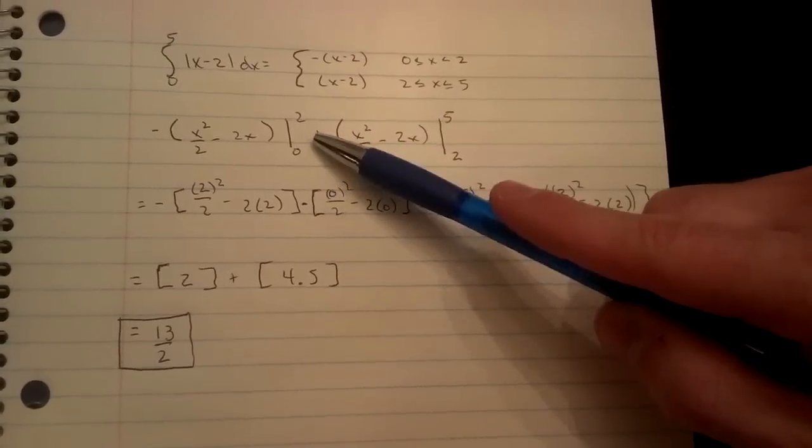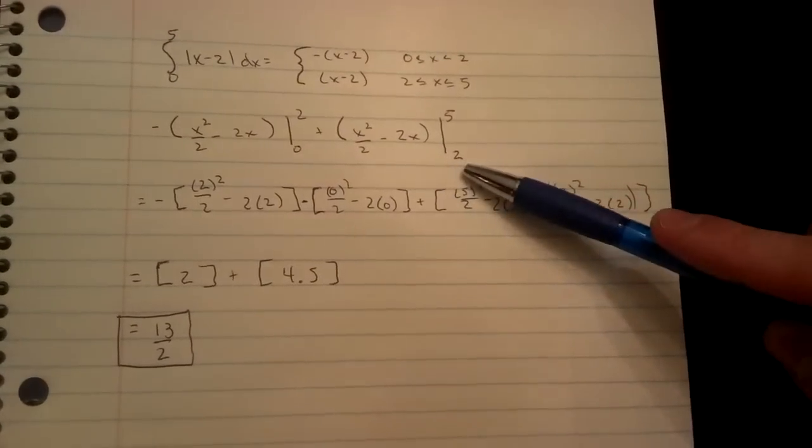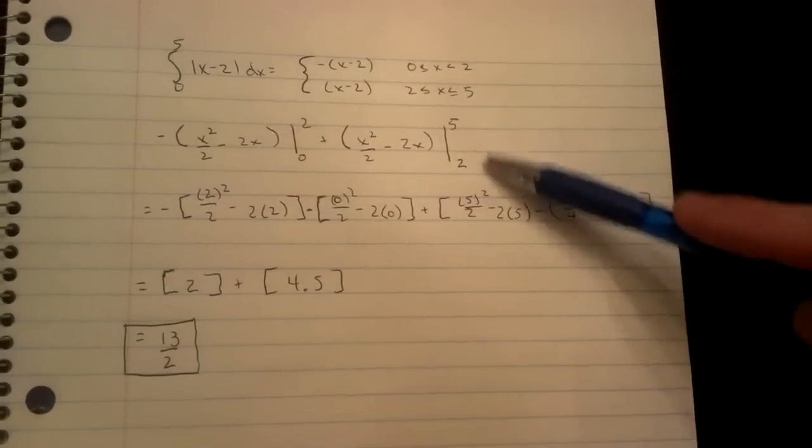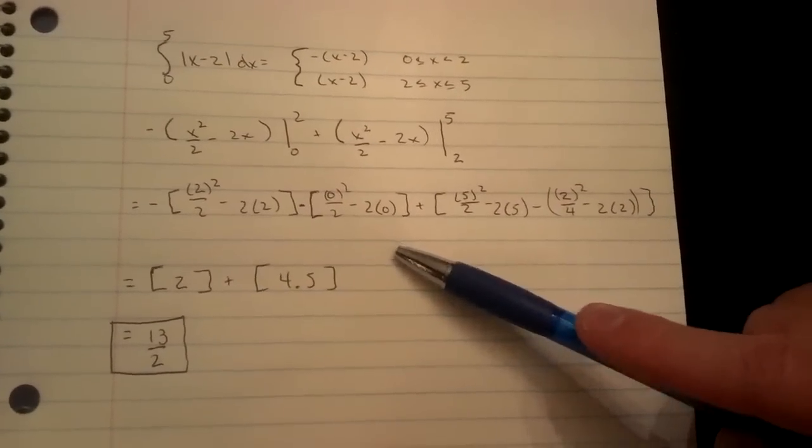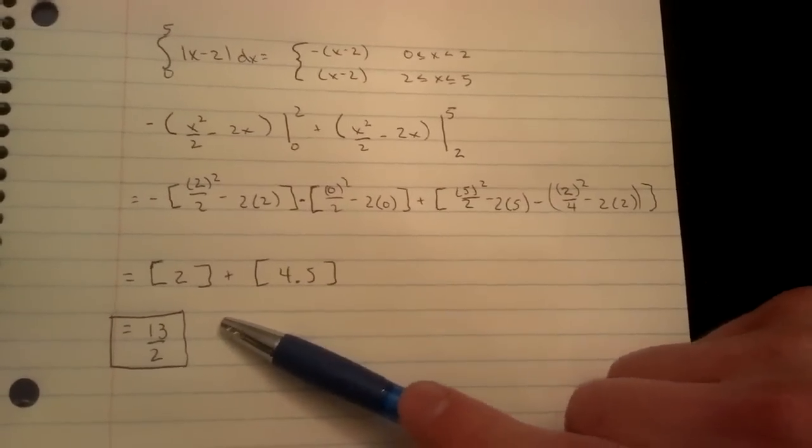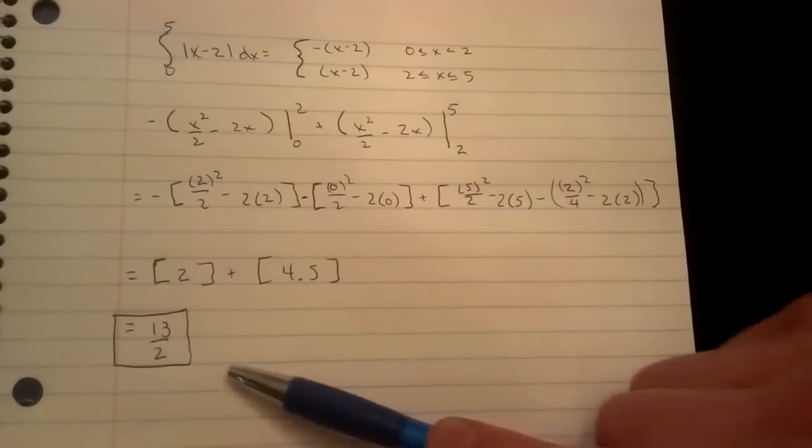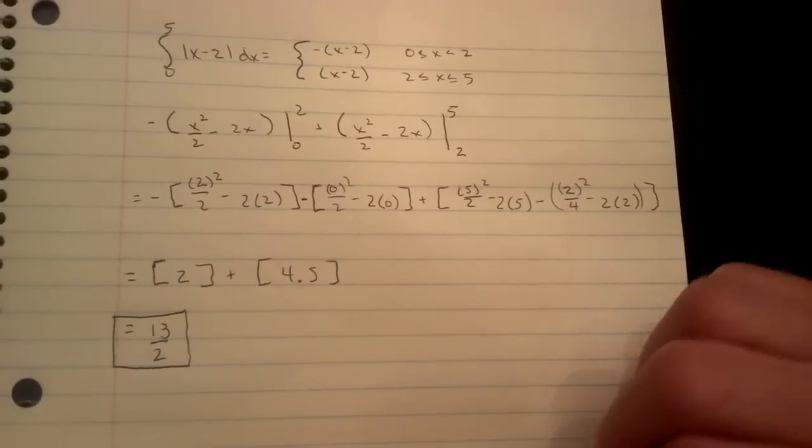For the first integral, a equals 0 and b equals 2. For the second integral, a equals 2 and b equals 5. We plug these into the antiderivatives and evaluate. Once simplified, we get 2 plus 4.5, giving a final answer of 13 over 2.